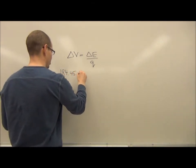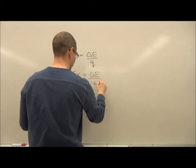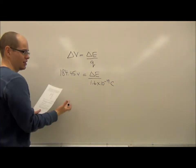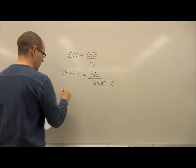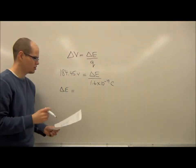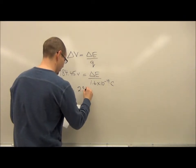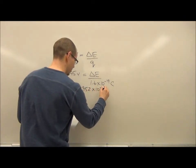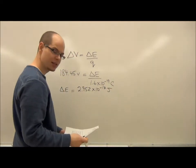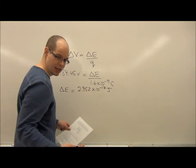184.45 is the voltage. I want to find my change in energy, and Q is 1.6 times 10 to the negative 19 coulombs for a proton. This is where I said if you used an electron, it wouldn't make a difference, because they actually have the same magnitude, and we're not worried about the sign here. So your change in energy here comes up to 2.952 times 10 to the negative 17 joules. That's the energy change of this particle between the plates.